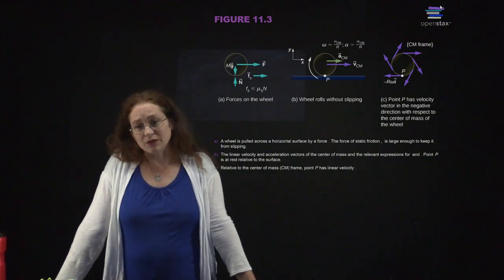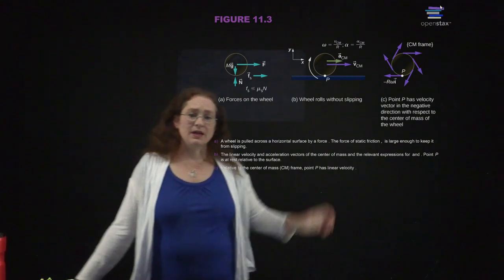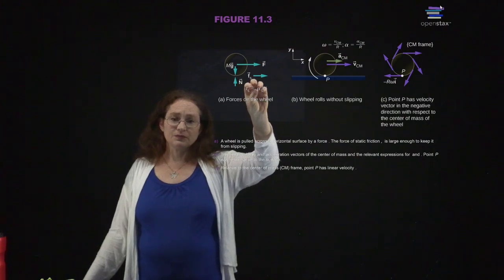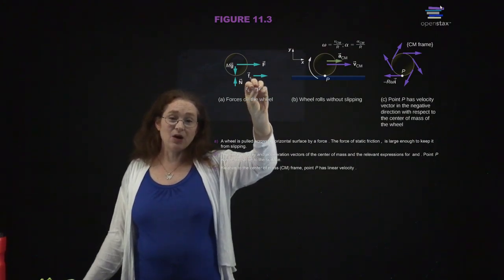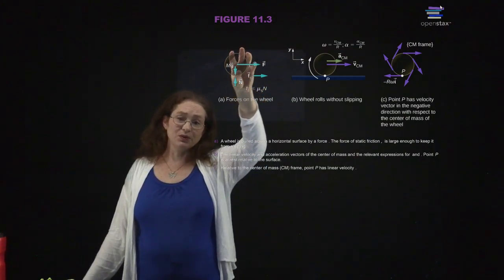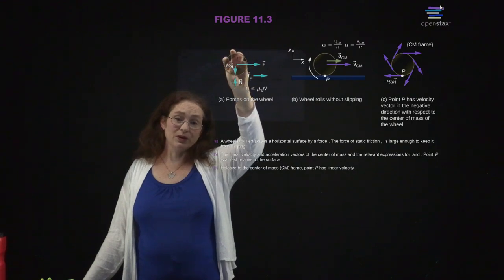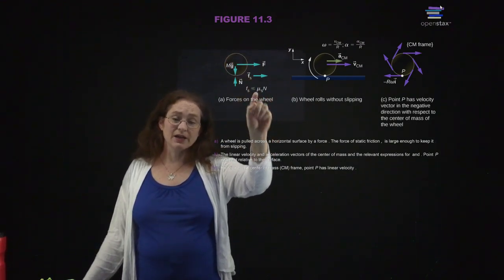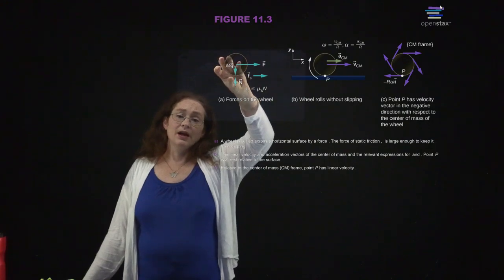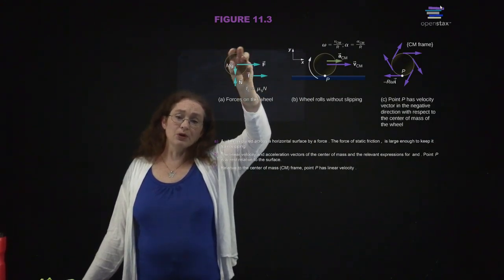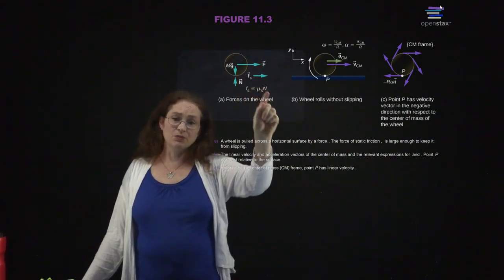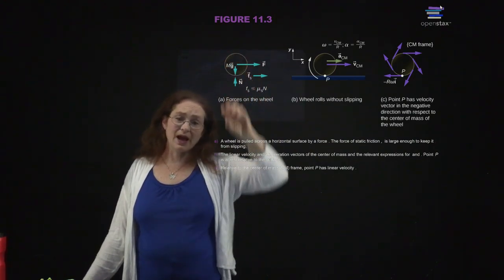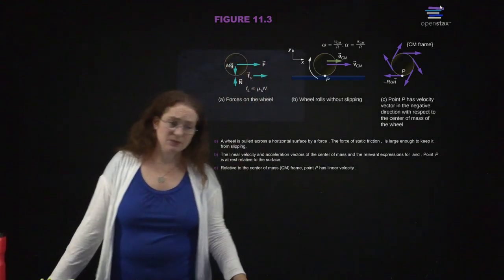We've talked about friction. When you have friction, there is a limit to how much static friction you have, because you want the wheel not to turn relative to the road — you are considering static friction, not kinetic friction. The mu sub s gives you the upper limit for how much static friction you can actually have in a system.